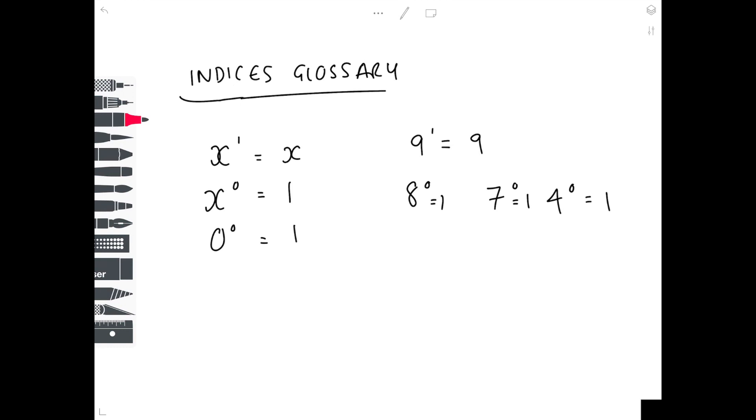And then lastly, when we're looking at indices, we often need to write in standard form - something like 1.25 times 10 to the 7. It's important to notice here this number must be bigger than or equal to 1, or less than 10. We call this standard form.